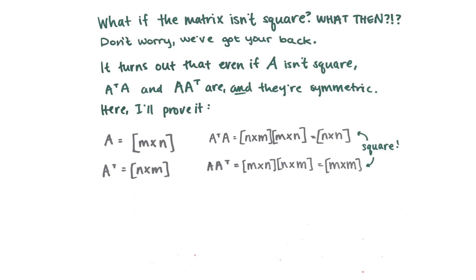Now what if the matrix isn't square? What do you do then? That's terrible! Don't worry, we've got a solution. It turns out that even if A isn't square, A transpose times A and A times A transpose are, and they're symmetric. If you don't believe me, I'll prove it.